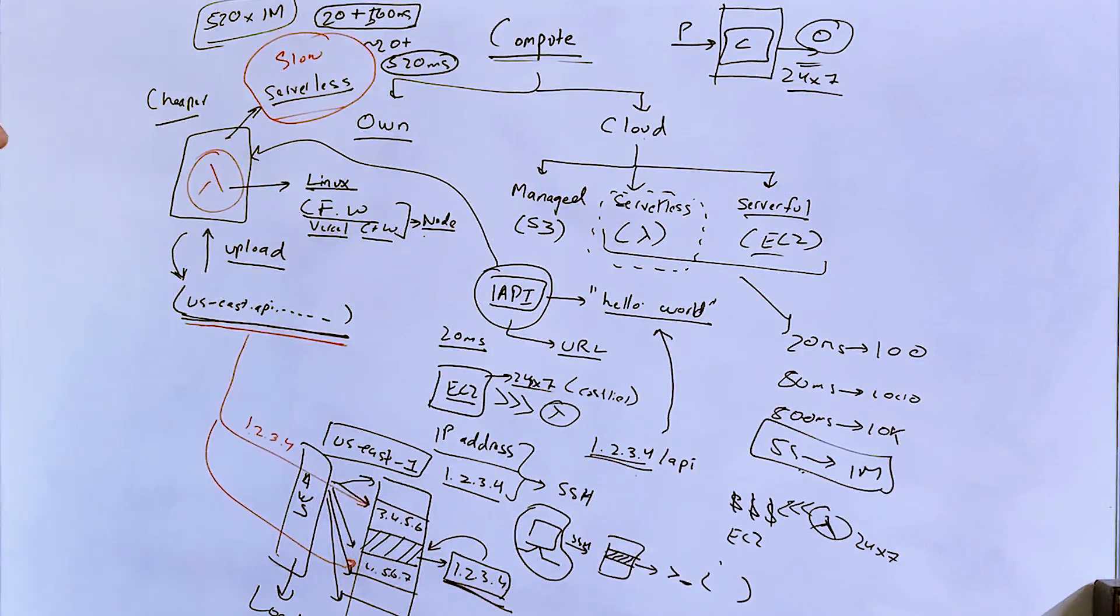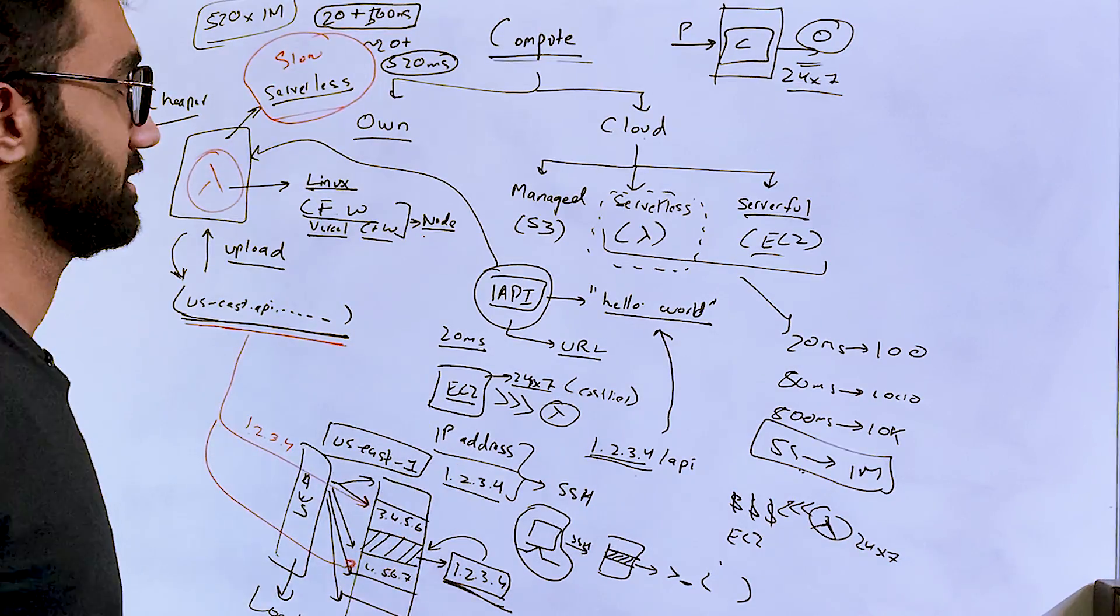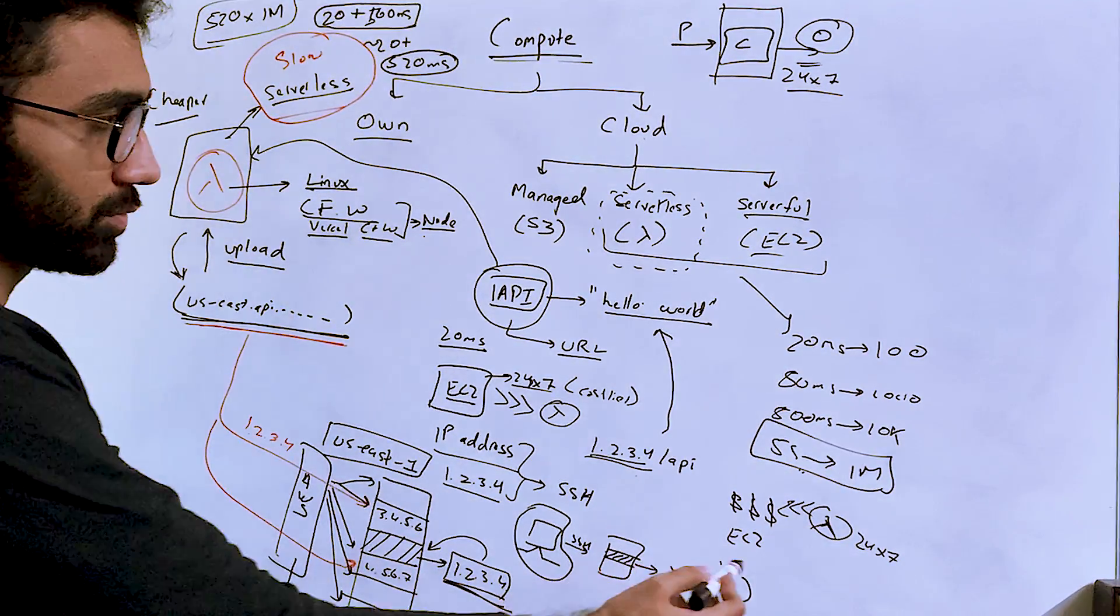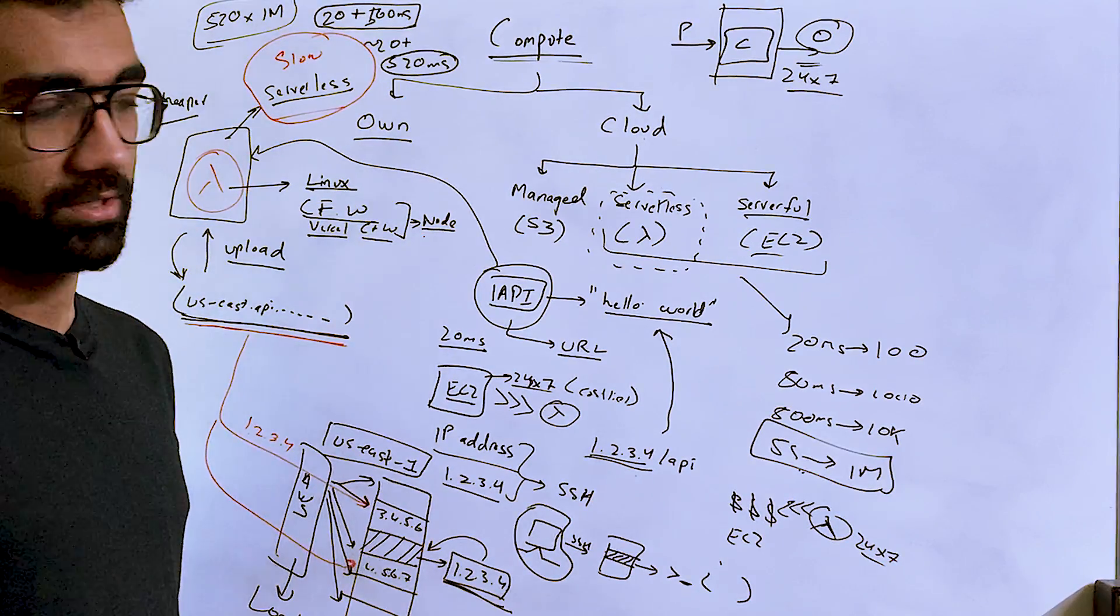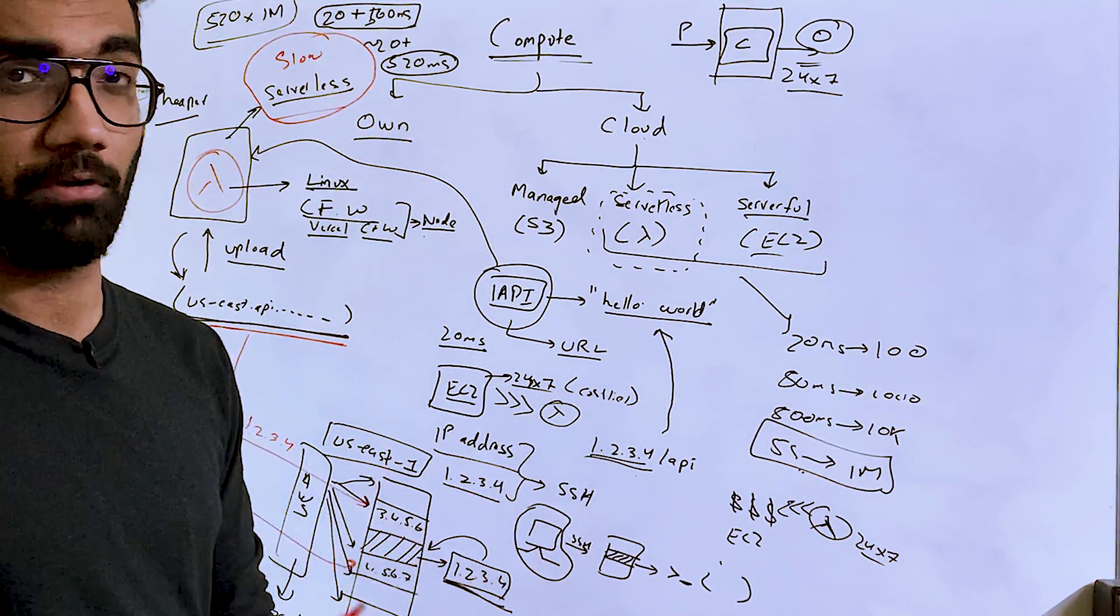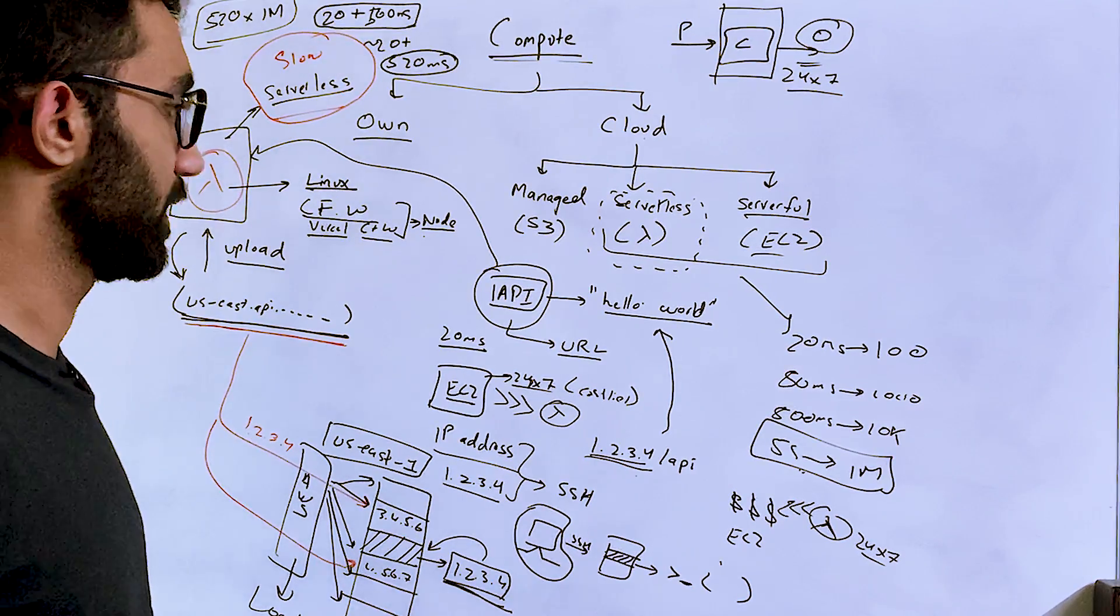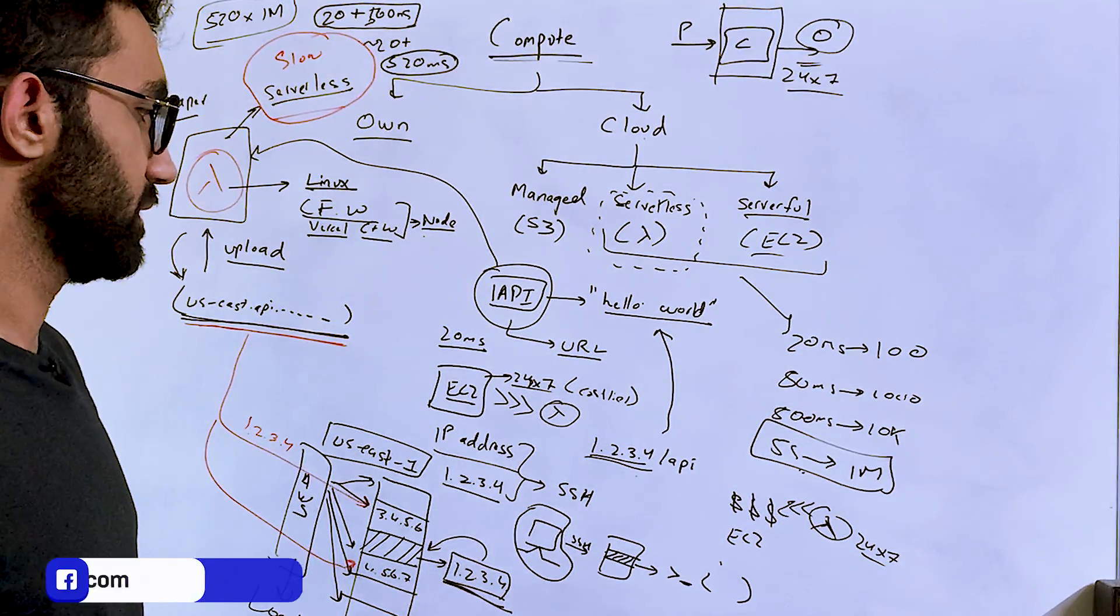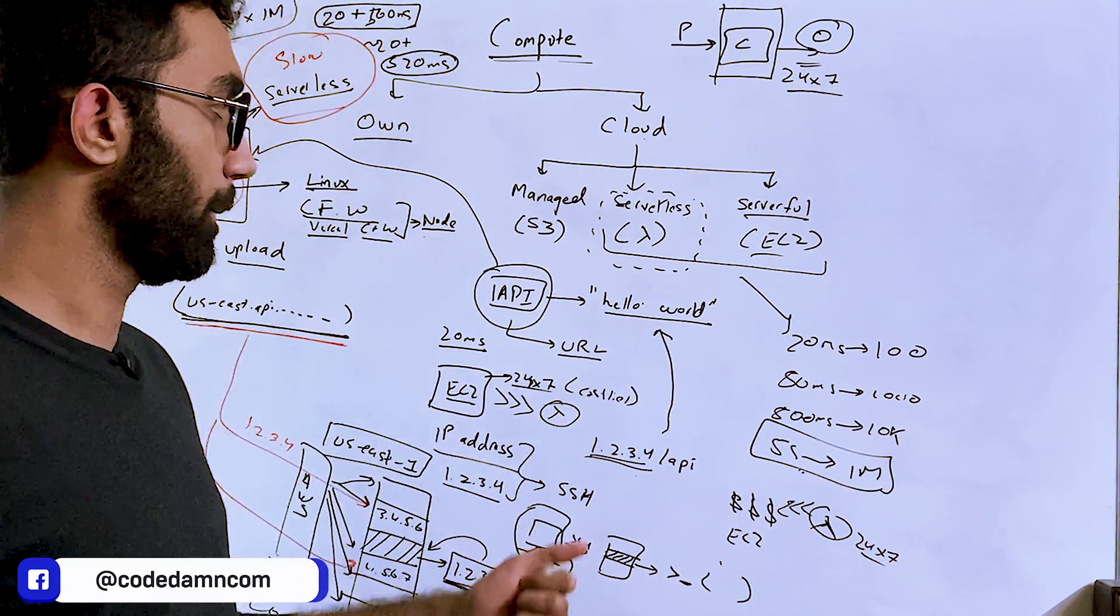So what should you use? Well, there is no right or wrong answer here, like we discussed. For some cases, I think for most cases, lambda would actually be cheaper because you would never be really running lambdas 24-7. That's where the cost benefit comes in, that it runs very infrequently or just for a few seconds at max per minute. So, yep, I mean, it depends on what your requirements are and everything.